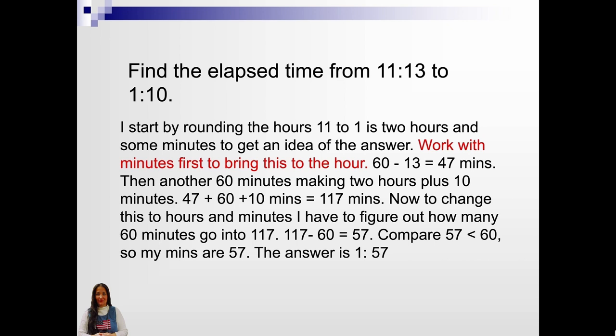Then another 60 minutes making it 2 hours plus 10 minutes. 47 plus 60 plus 10 minutes equals 117 minutes. Now, to change this to hours and minutes, I have to figure out how many minutes go into 117. 117 minus 60 is 57. Compare 57 is less than 60. So, minutes are 57. The answer is 1:57. 1 hour and 57 minutes.